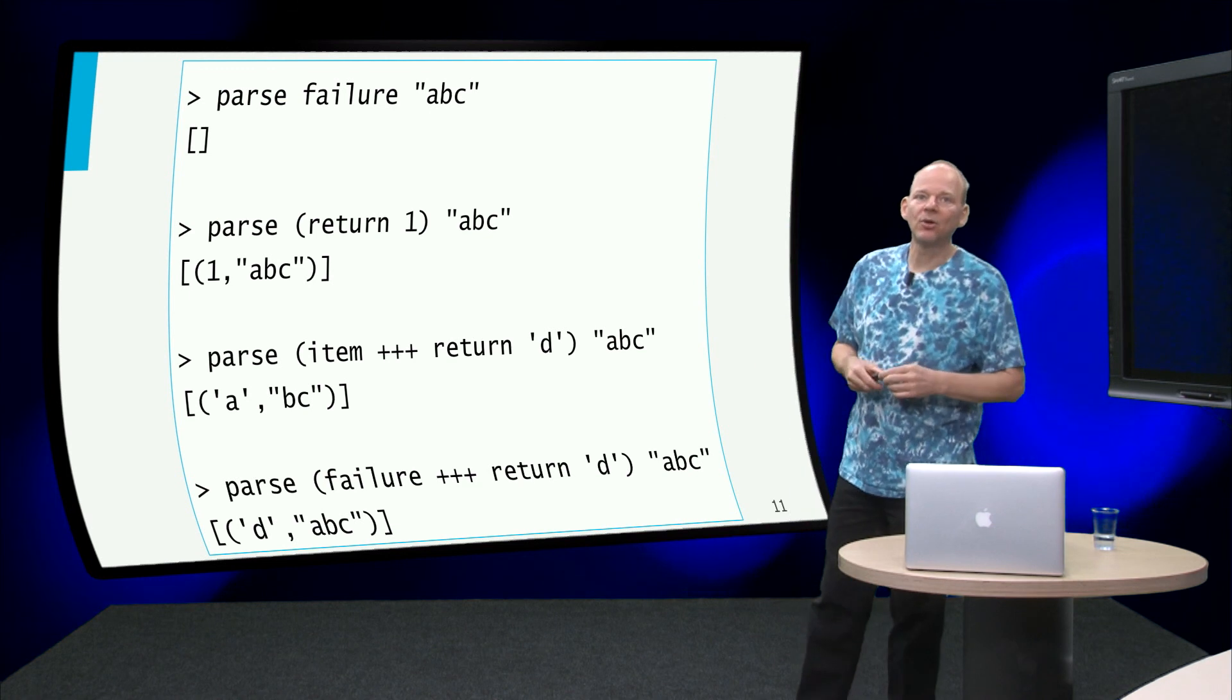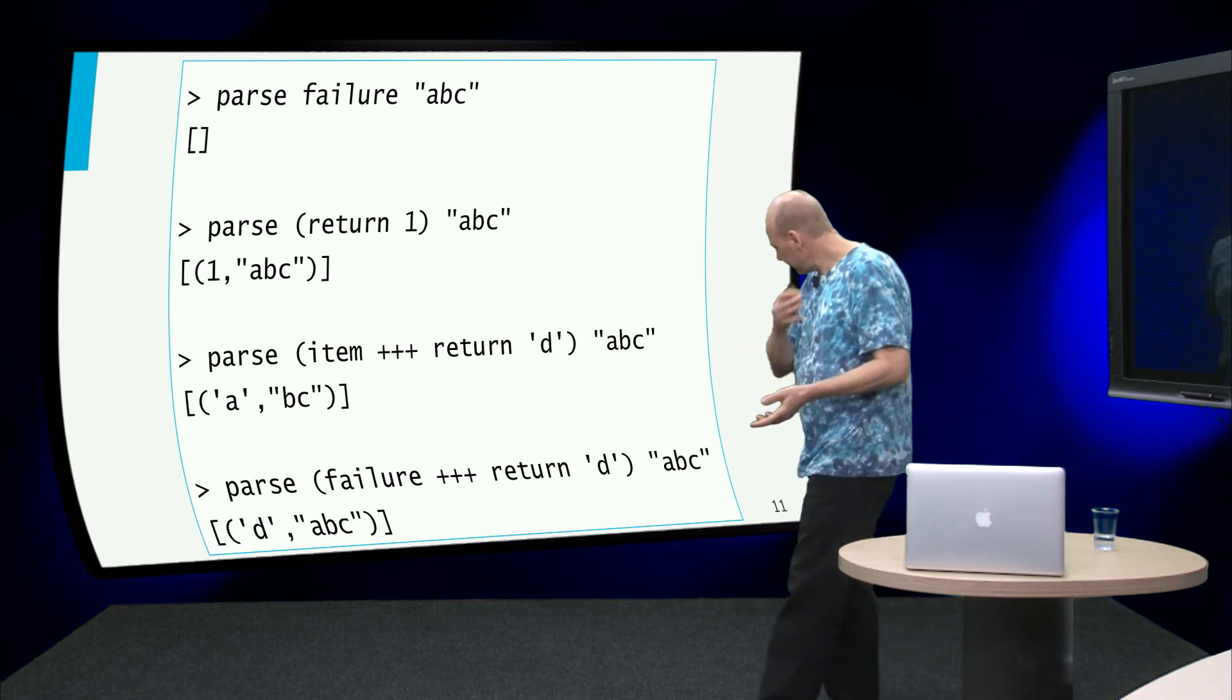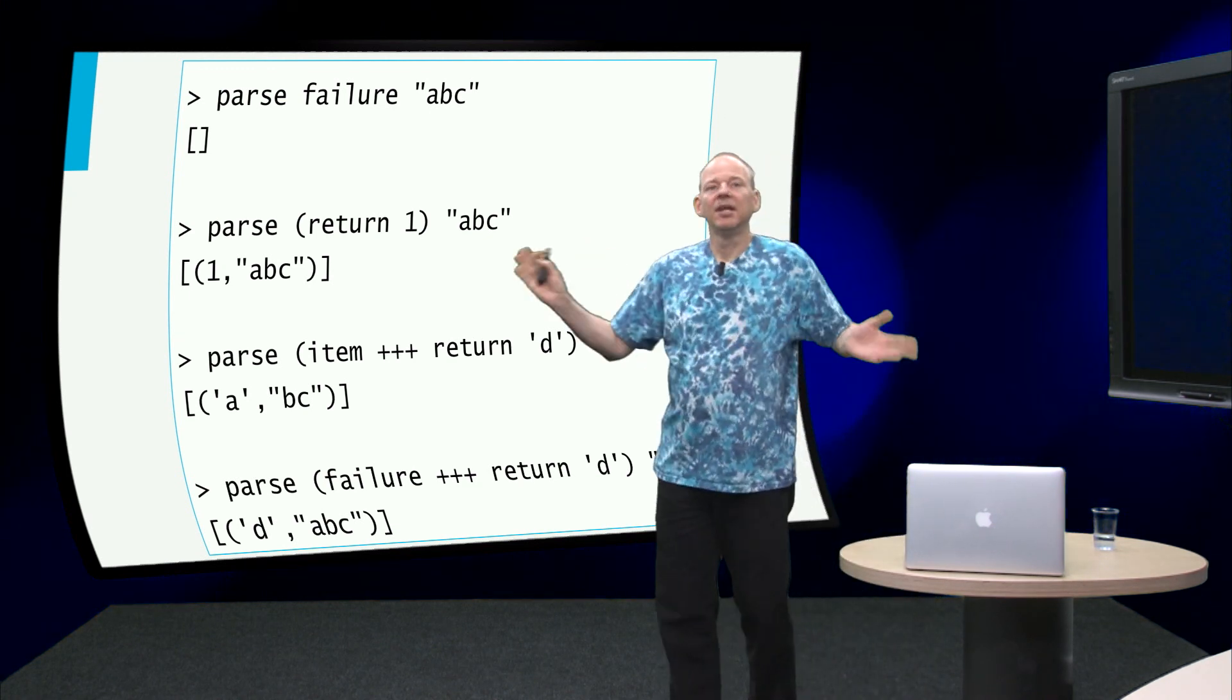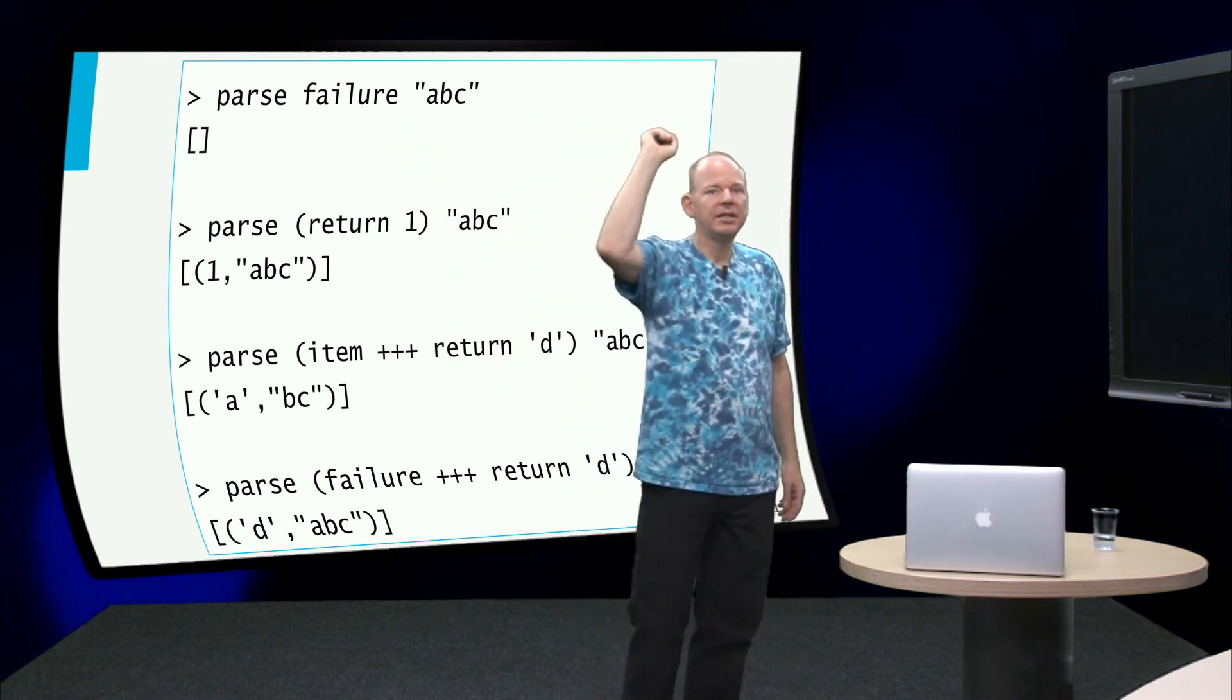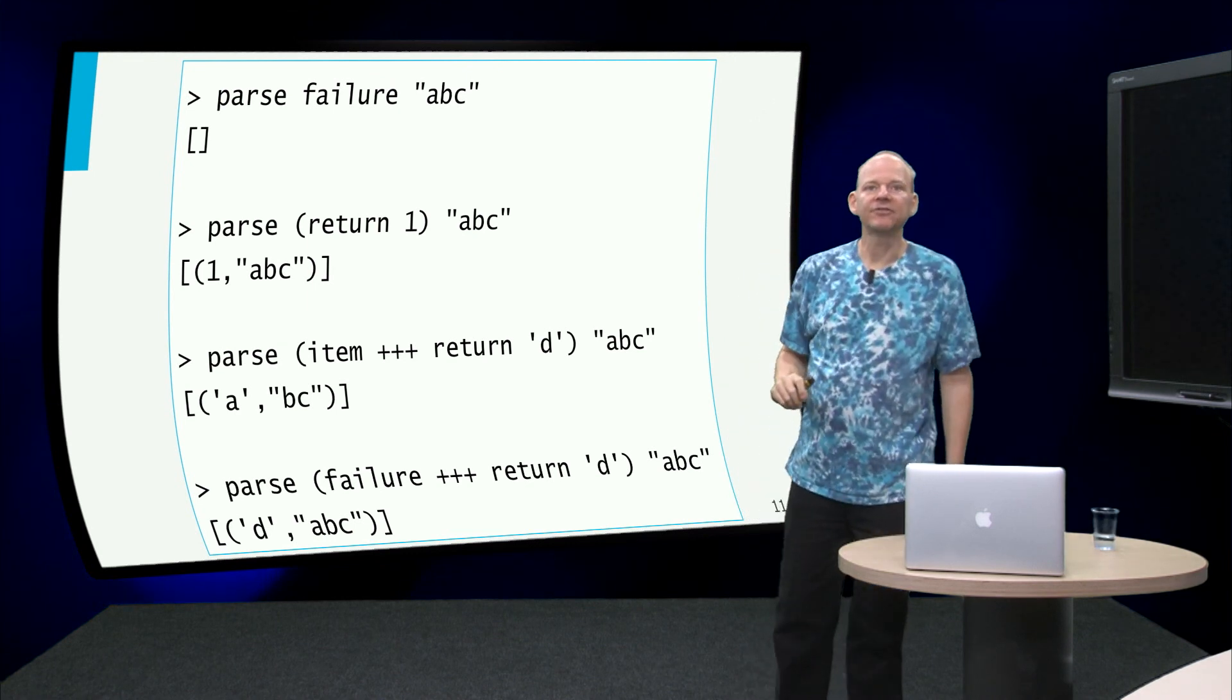Let's try the parser that always fails. So the parser that always fails, whatever input we give it, it should fail, it should return the empty list. So let's give it the input abc and yes, boom, it returns the empty list.